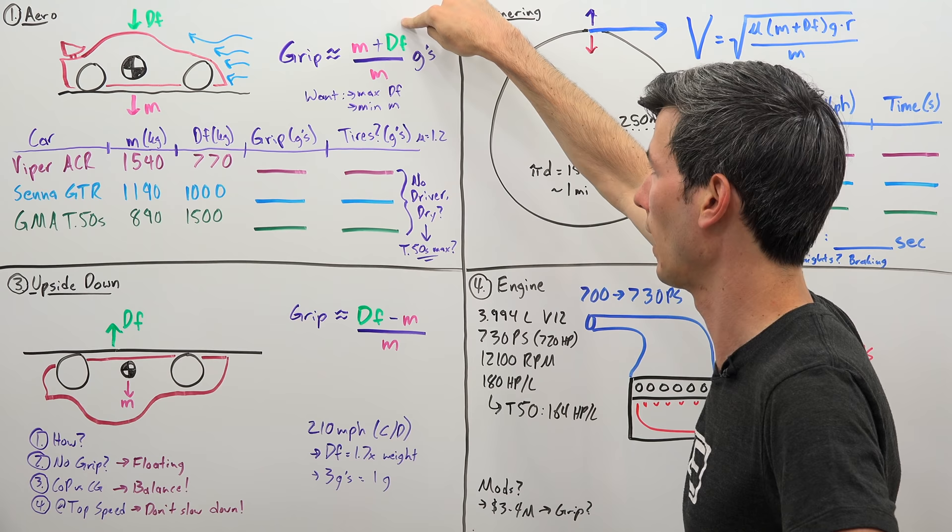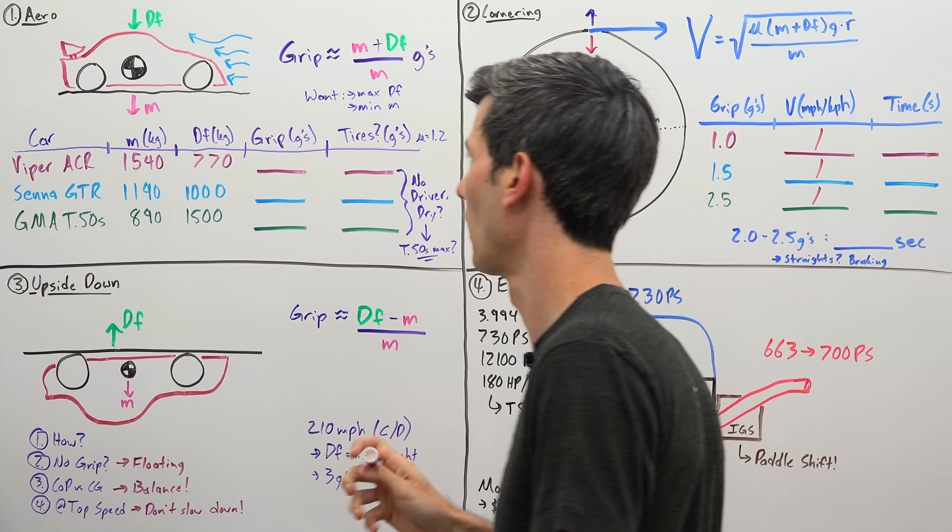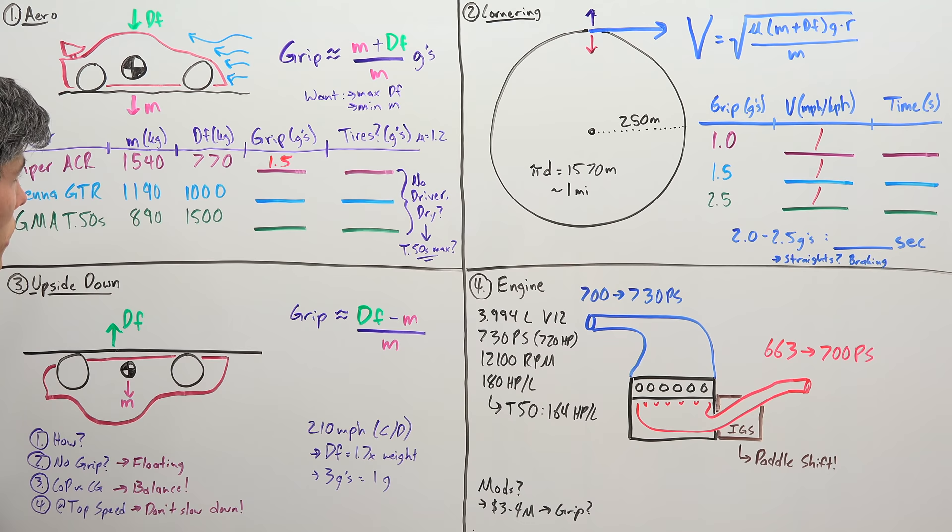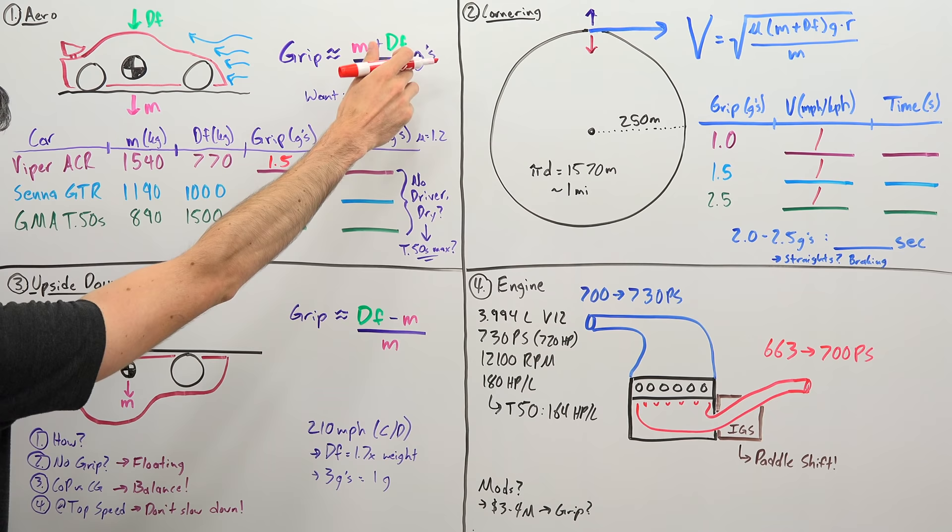For example, we can look at our Viper ACR which has a mass of 1540 kilograms, downforce of 770 kilograms, and that gives us a grip of 1.5 G's. Now that's assuming those tires are pretty basic. If you had some pretty advanced tires with a frictional coefficient of 1.2, that's basically a multiplier effect, and you'd be at around 1.8 G's.